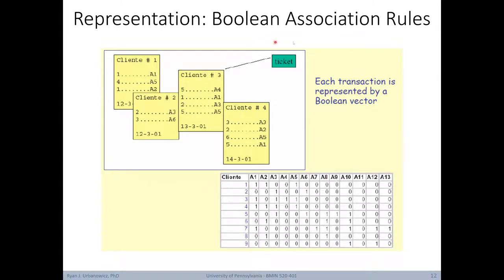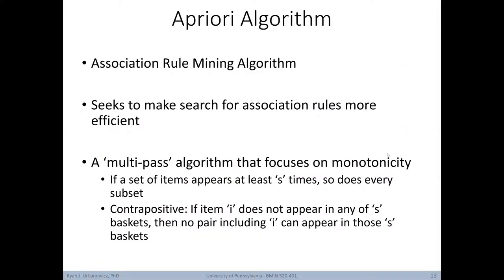One way to tackle this problem is to use Boolean association rules. We have a number of transactions where different items were bought in each situation. Each ticket represents a specific transaction with items labeled A1 through 13. We then create a binary dataset where all rows indicate transactions and all columns indicate possible items. If the item was purchased in a transaction, it gets a 1, and if it wasn't, it gets a 0. Now that we know the basics of association rule mining, let's take a look at a specific example: the a priori algorithm.